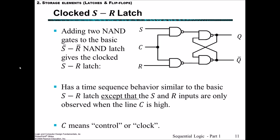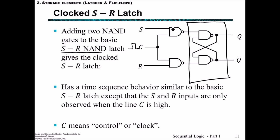In the first part of this lecture, we talked about the synchronous circuit where we included a clock. By including this clock here, we're able to have this SR latch which functions very similarly to the SR NAND latch, except that S and R inputs are only observed when the clock line C is high — that is, when we get a clock pulse. By adding two more NAND gates and this clock input to the SR NAND latch, we have what's called a clocked SR latch.